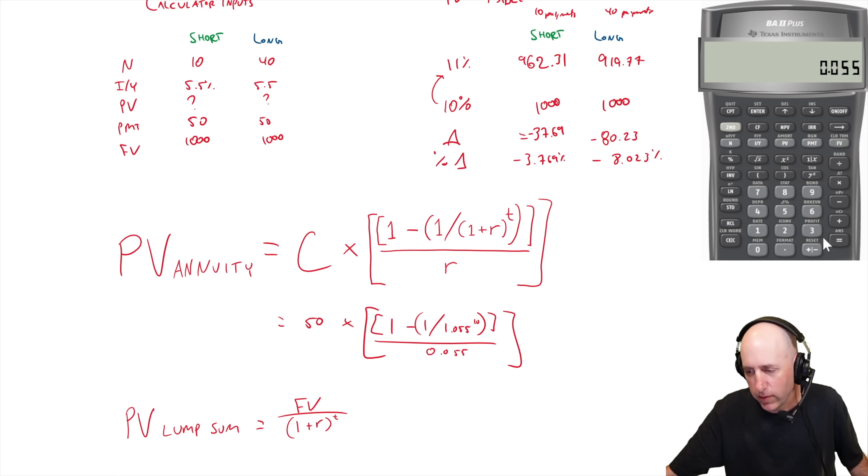Divide by 0.055, and I get 7.537 for what's in the brackets, times 50, 376.88.